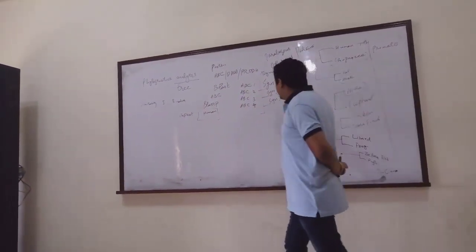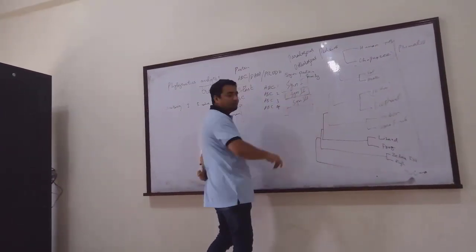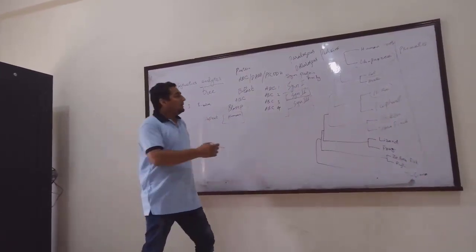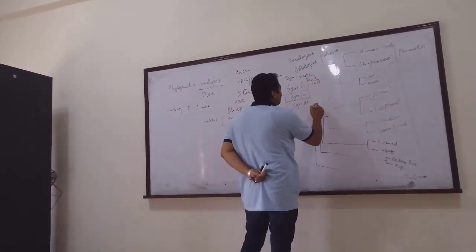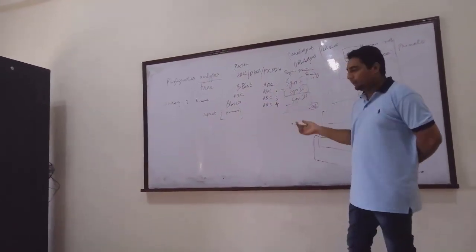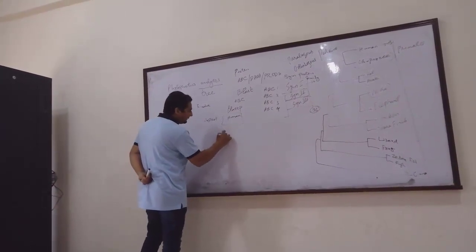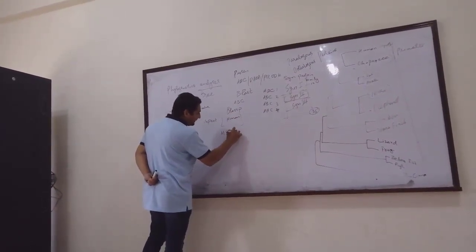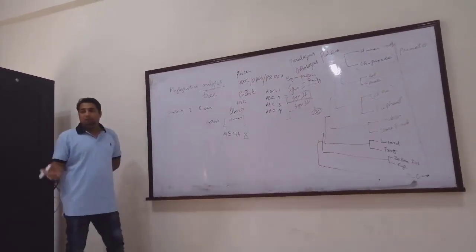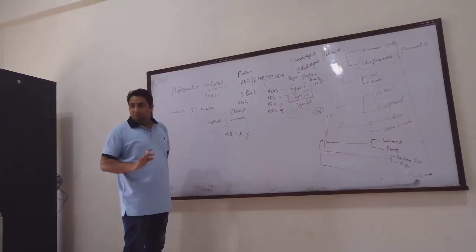Similarly, after that you have to perform the same experiment for sequence retrieval with SYN2, then SYN3. After that you will have so many sequences — for 1 protein we have 12, so for 3 we have roughly 40 sequences in total.